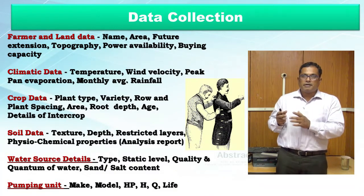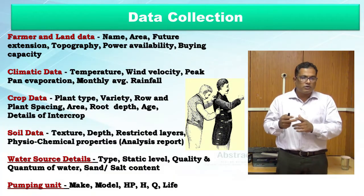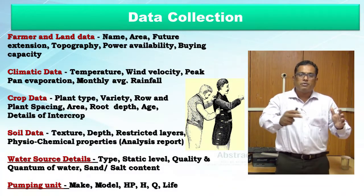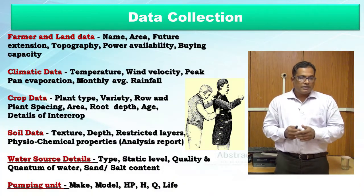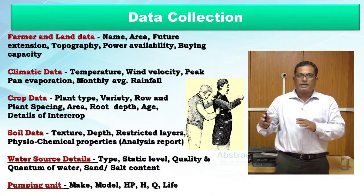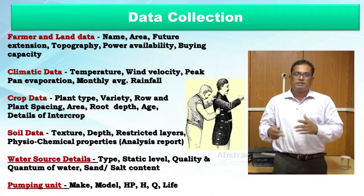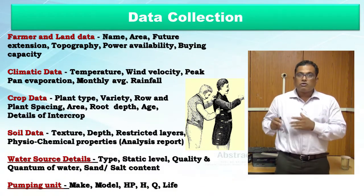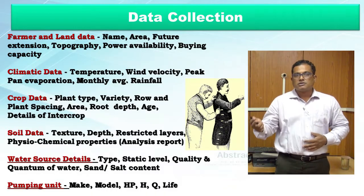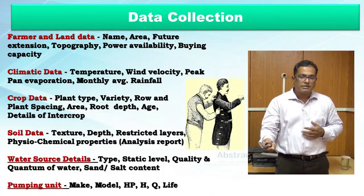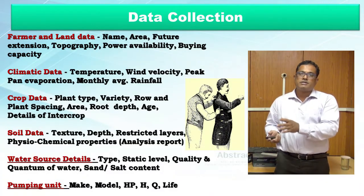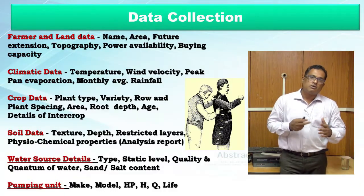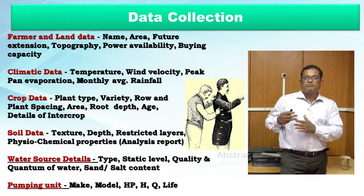Before installing a drip irrigation system, several data types are required. First, land details: the area, potential for future expansion, and topography — whether the land is flat or undulating — since this decides the type of system to install. Power availability is also critical: is it electricity, diesel, or solar energy? How many hours of power are available per day? This must be matched to the system requirement.